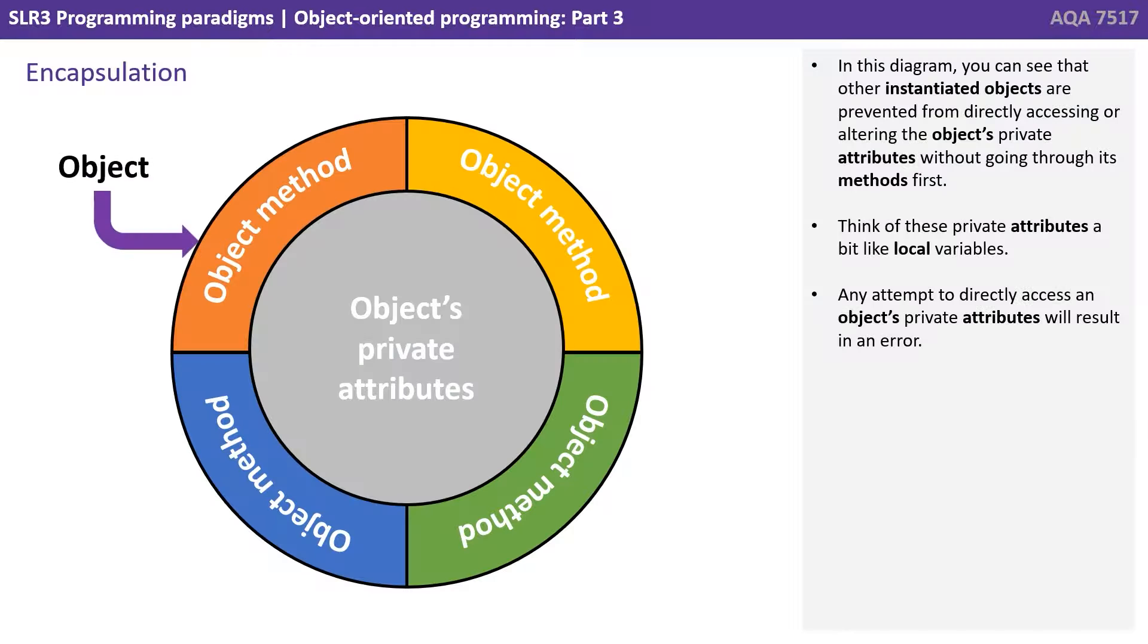In this diagram, you can see that other instantiated objects are prevented from directly accessing or altering the object's private attributes without going through its methods first. Think of these private attributes like local variables. Any attempt to directly access an object's private attributes will result in an error.